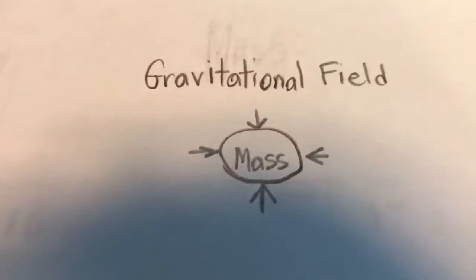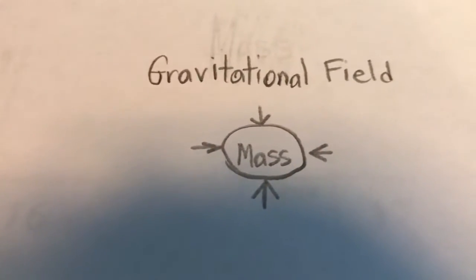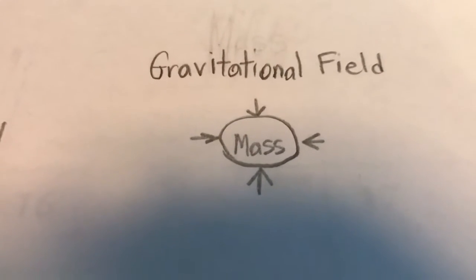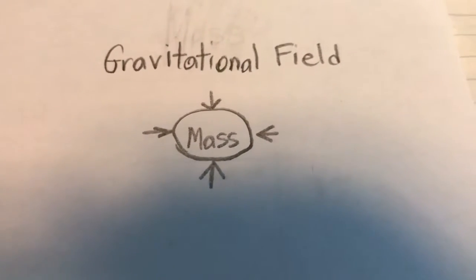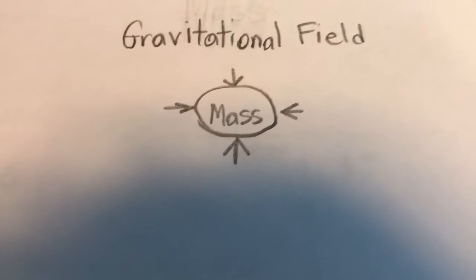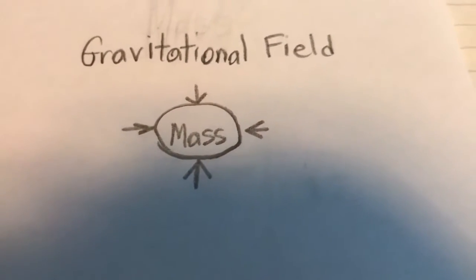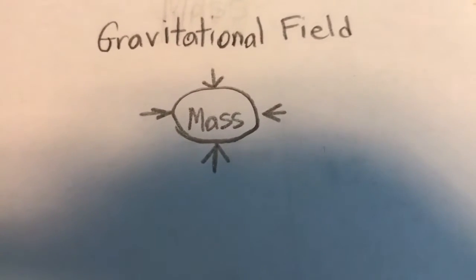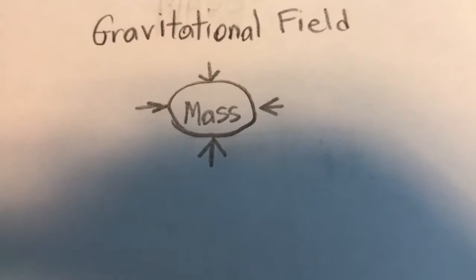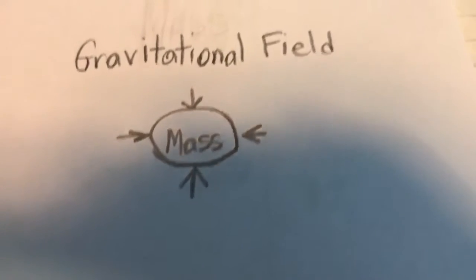Mass is a good analogy for electric charge, so we can start there. Whenever mass is present in space, it affects the gravitational field. The gravitational field, in turn, affects other masses near the central mass, drawing them both together. Electric charge is similar. Any charge will affect the electric field near the object, and in turn the electric field will cause any other charges near it to accelerate.